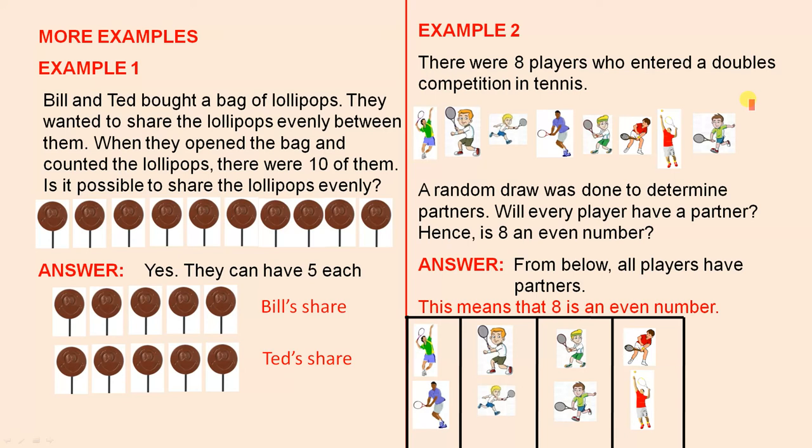Example two. There were eight players who entered a doubles competition in tennis. One, two, three, four, five, six, seven, eight. A random draw was done to determine partners.